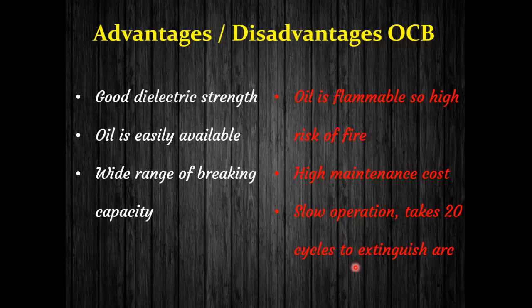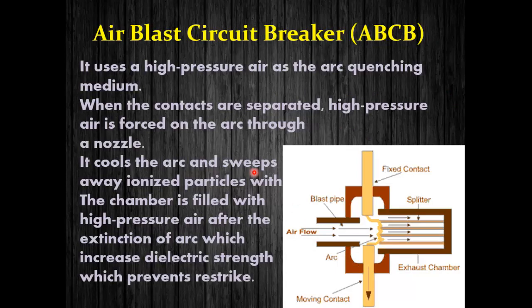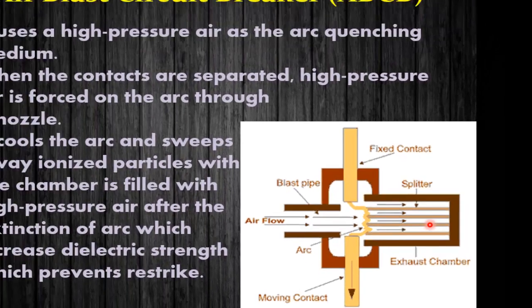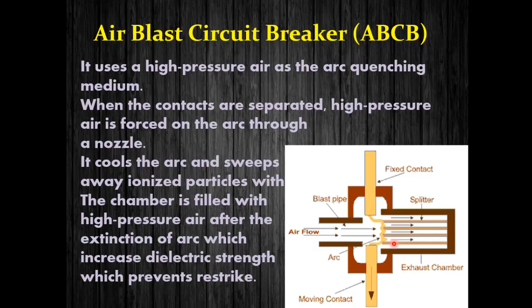The air blast circuit breaker (ABCB) uses high pressure air as the arc quenching medium. When the contacts are separated, high pressure air is forced into the arc, which pushes and elongates the arc into a splitter, helping to cool it. The high blast of air sweeps the ionized particles within the chamber. The chamber is then filled with high pressure air after arc extinction, which increases the dielectric strength and prevents restriking of the arc.